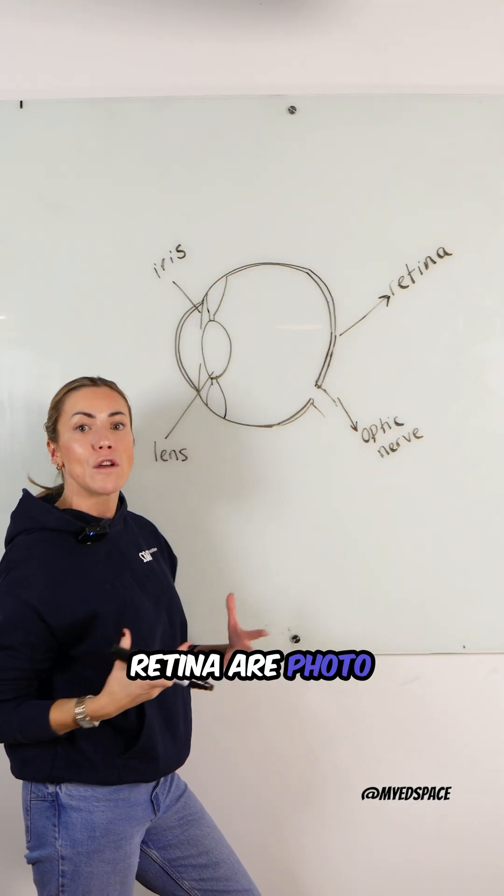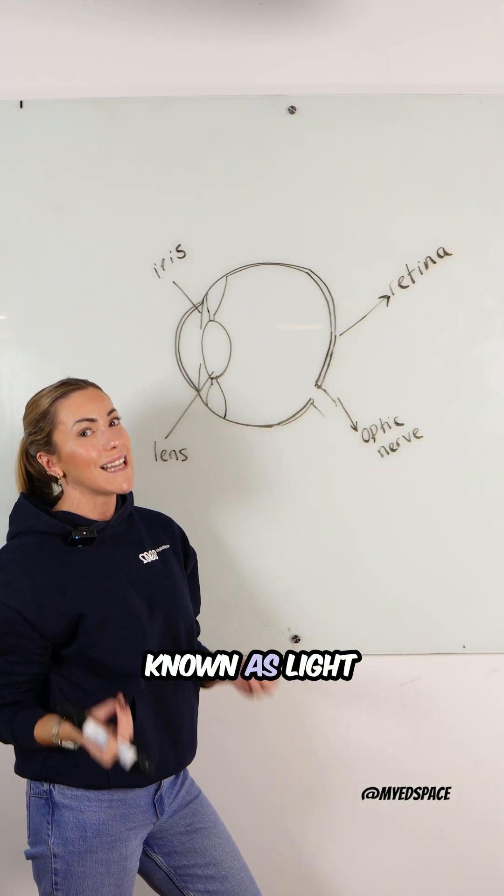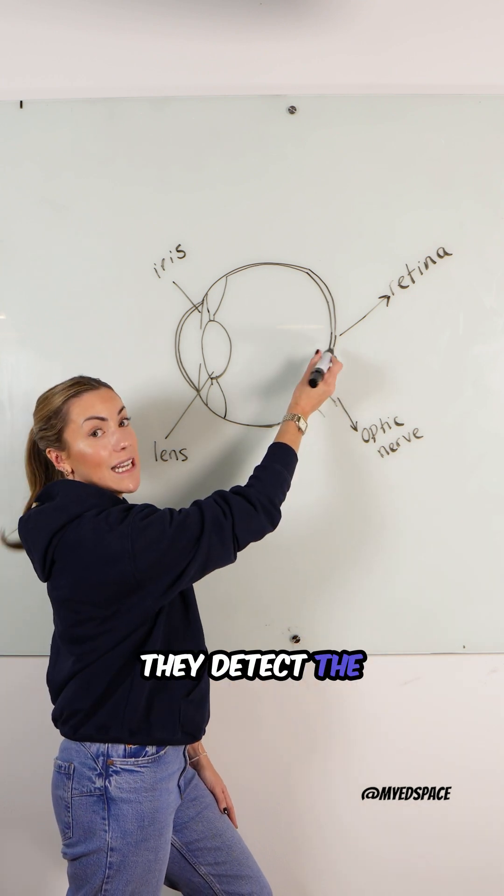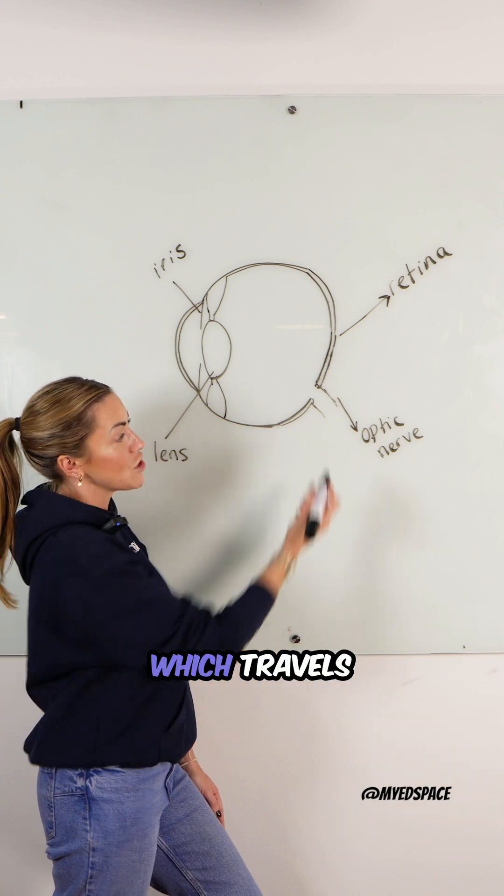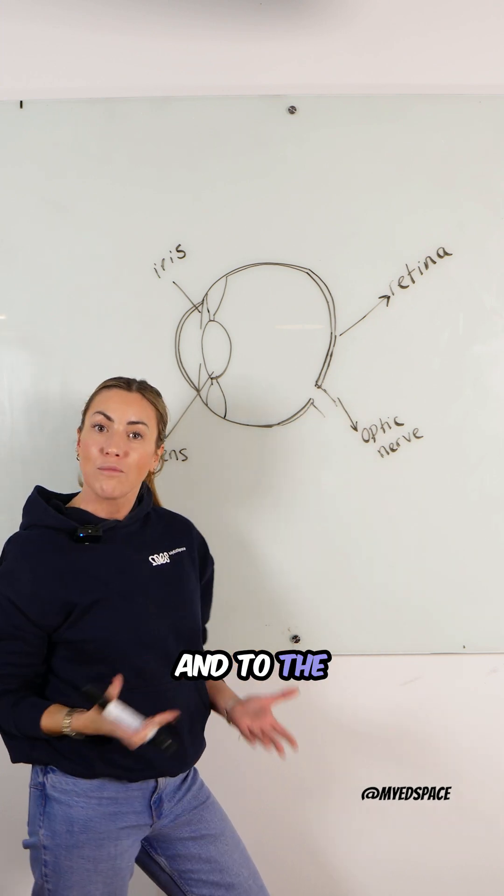Now in the retina are photoreceptor cells, also known as light receptors. They detect the light stimulus and convert it into an electrical impulse which travels down the optic nerve and to the brain.